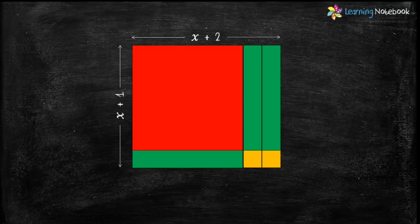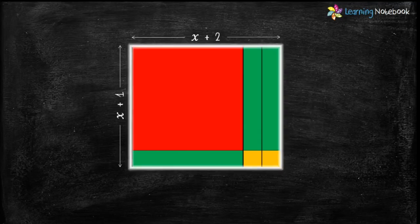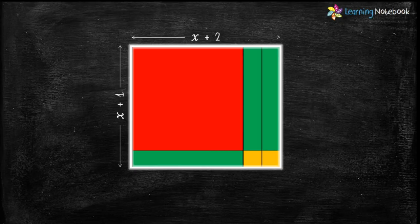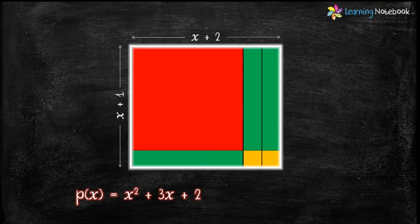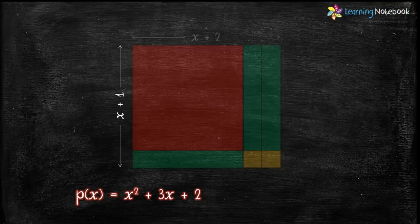Students, we have arranged all the shapes we got from polynomial p(x) into this big rectangle. Therefore this big rectangle equals p(x) which equals x² + 3x + 2, and the area of this big rectangle is (x + 1) times (x + 2).